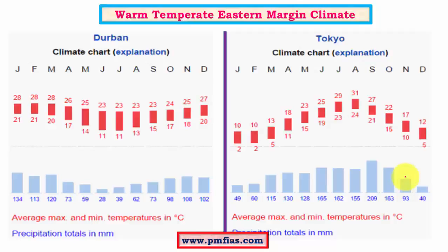Looking at the climate graph, during summer the rainfall is good whereas in winter it is comparatively lower. This type also has local variations. For example, in Durban the rainfall is good in the summer months and low in winter, whereas Tokyo, which is mainly under the influence of oceans, has comparatively better and well-distributed rainfall throughout the year.